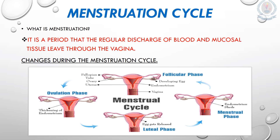Look at the picture very carefully. In this picture you can see the changes that occur during the menstruation cycle. According to the picture, the menstruation cycle has 4 phases. In day 1 to day 5, the uterus tissues, egg, and blood are discharged through the vagina. We call this the menstruation phase.